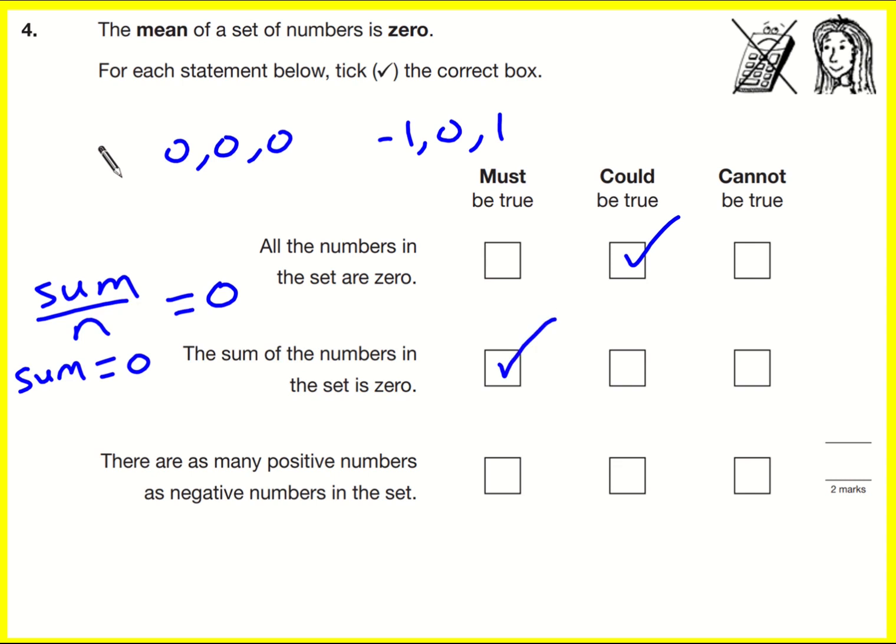Finally, are there as many positive numbers as negative numbers in the set? Well, it is true over here. But let's just play around a little bit more. What if I had minus one and minus one, and then zero and then two? So now I've still got my sum equal to zero. So the mean will be zero. But I have one positive number and two negatives. So it's not necessarily true. But actually, here's an example where it was true. So this one is also could be true. Nice question.